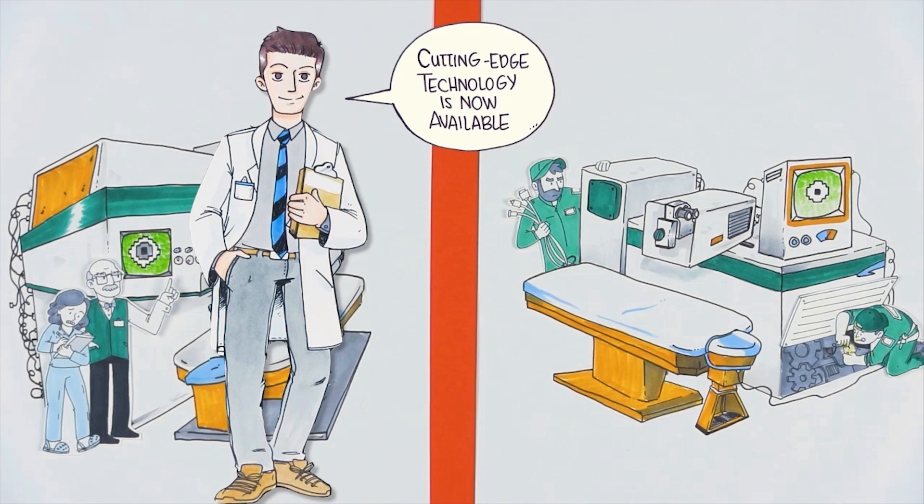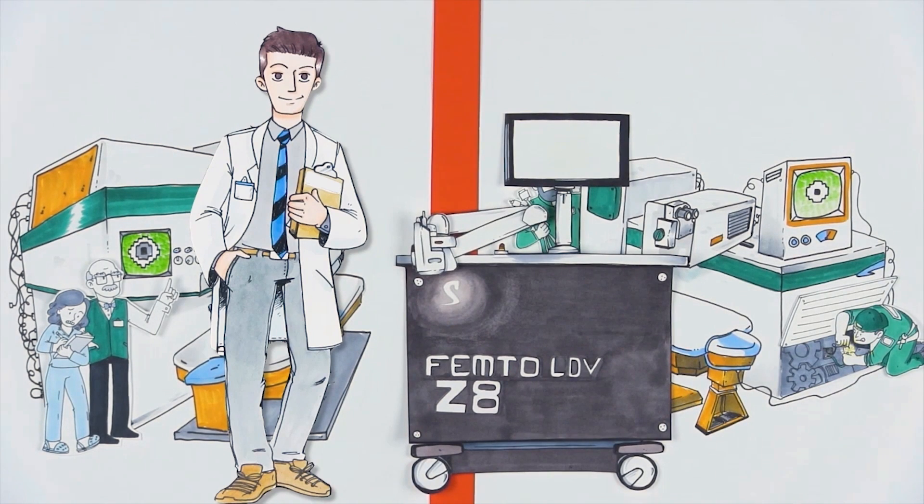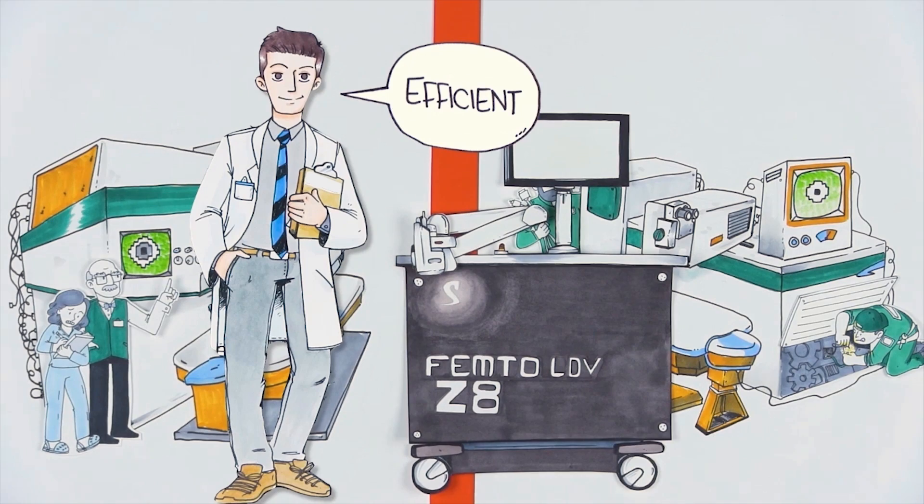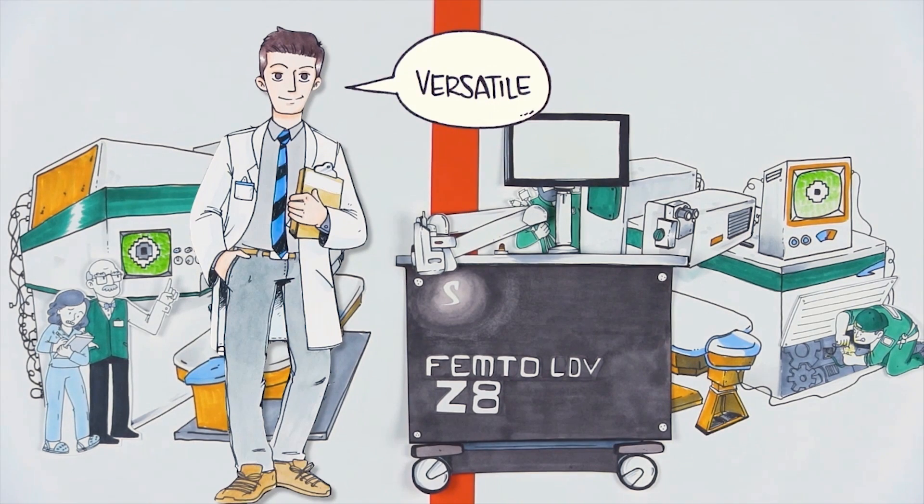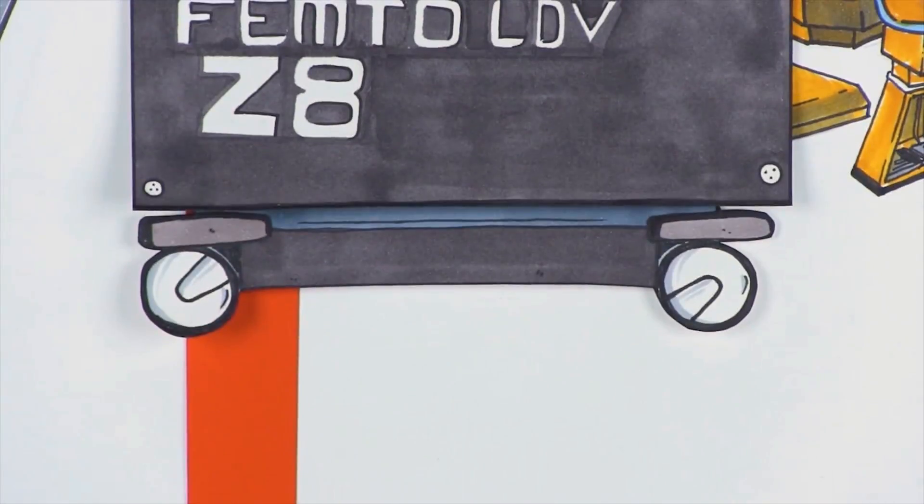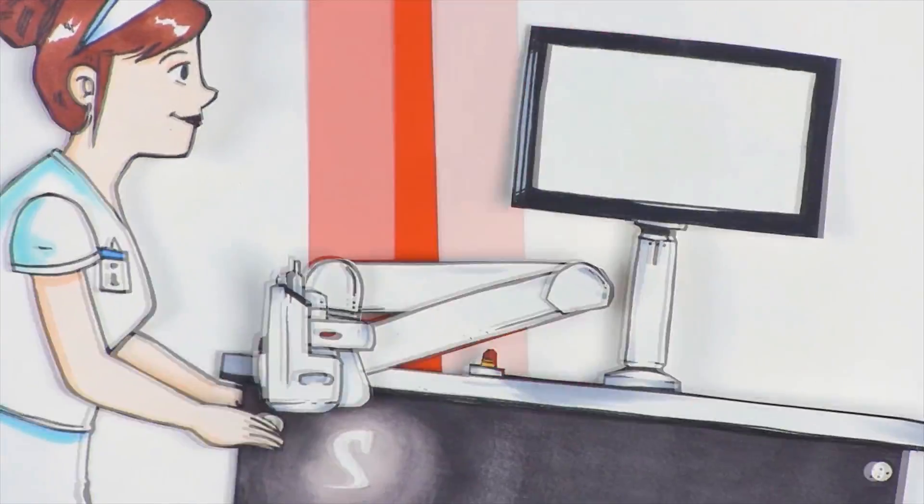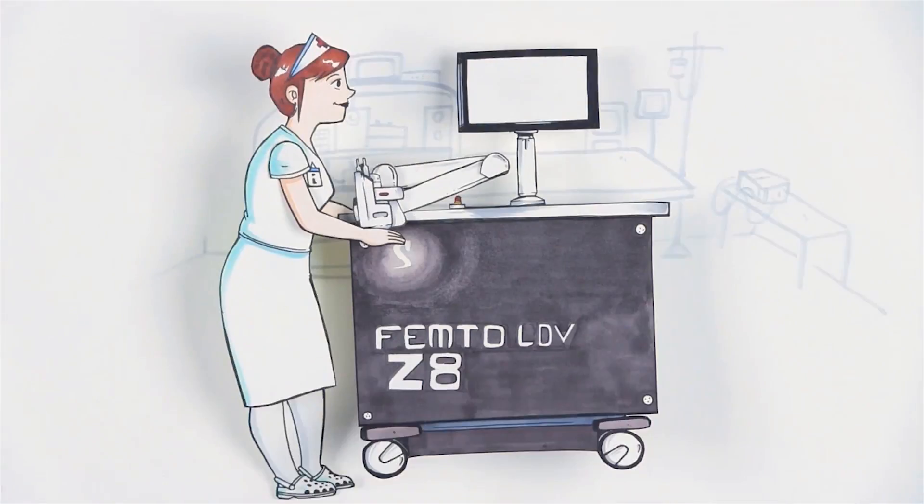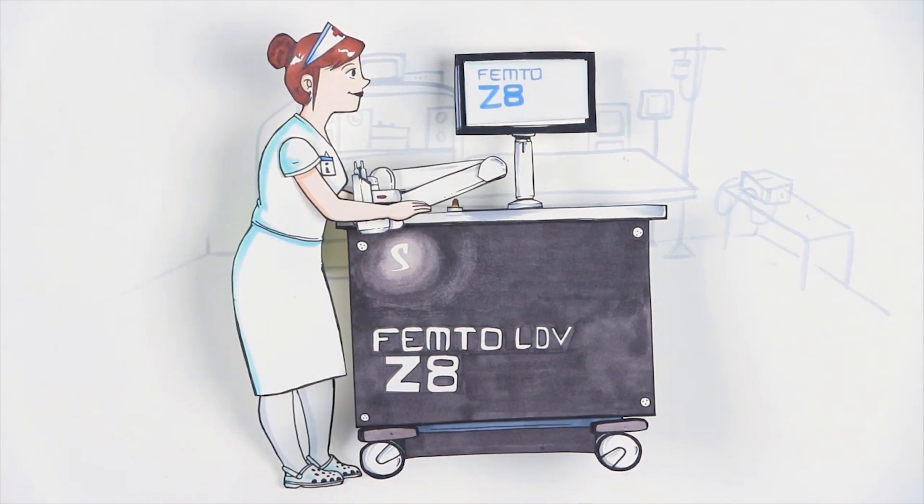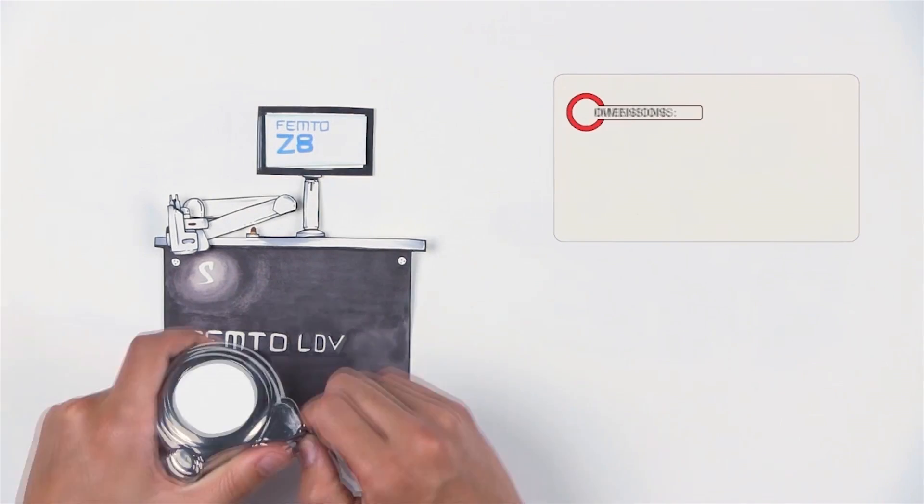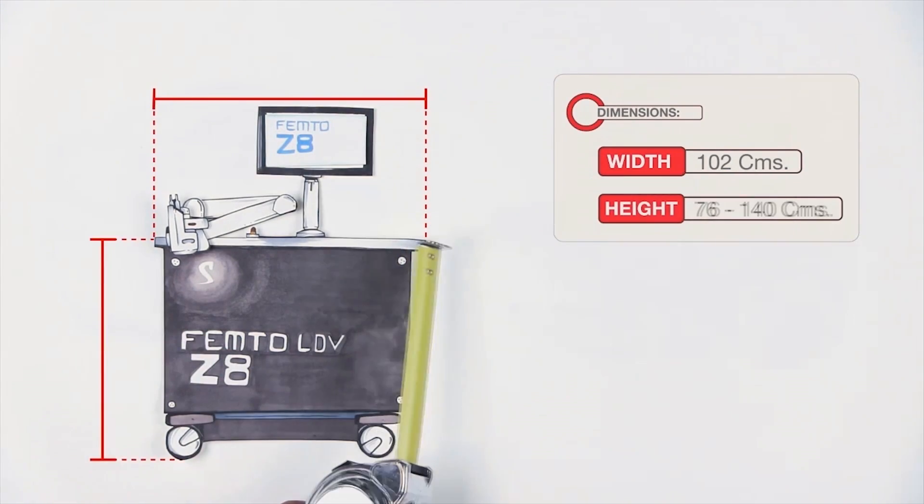This is the Femto LDV C8, a mobile, efficient, and versatile femtosecond laser by Ziemer. It's mobile because of the compact design and its wheels that allow moving across rooms and clinics. No installation, no alignment, no calibration, and no need for engineers. It's efficient because its design saves time and space.